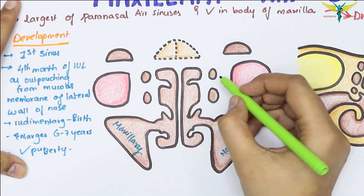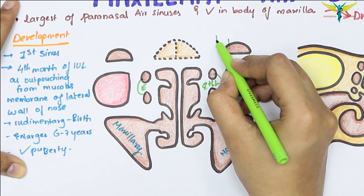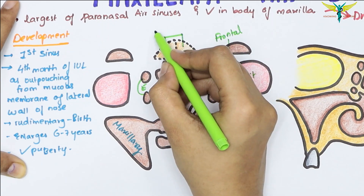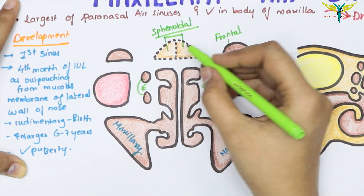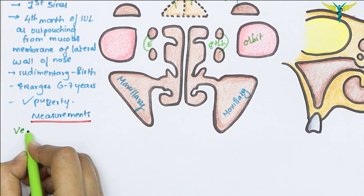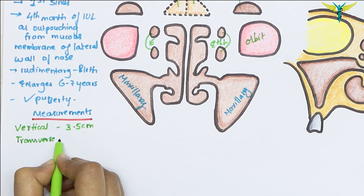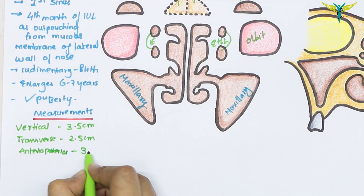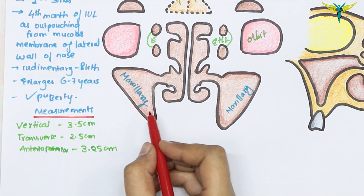On both sides these are the ethmoidal sinuses, this is the orbit, these are the frontal air sinuses that are above the orbit, and the sphenoidal air sinuses lie behind the orbit. Coming to the measurements, the vertical measurement is 3.5 centimeters, the transverse is 2.5, and the anteroposterior is 3.25 centimeters. The shape of the maxillary air sinus is pyramidal.